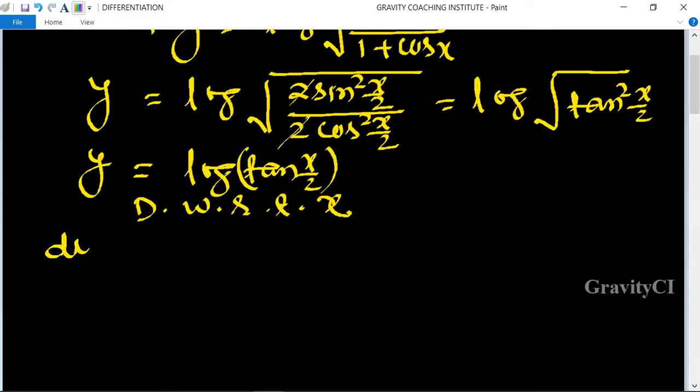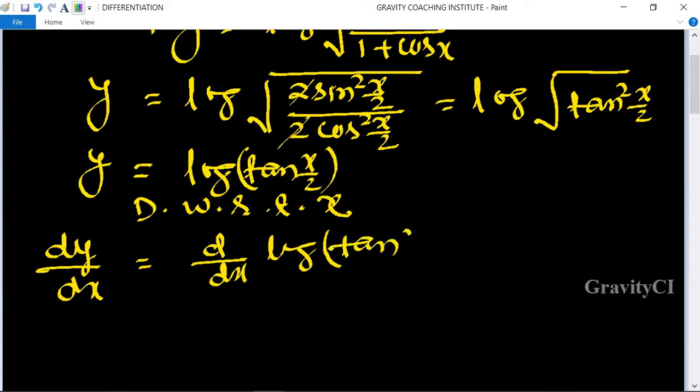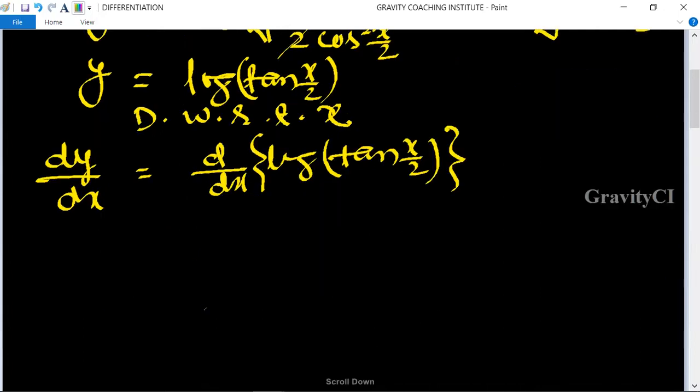We get dy/dx = d/dx[log tan(x/2)]. Using the derivative formula, this equals [1/tan(x/2)] × d/dx[tan(x/2)].